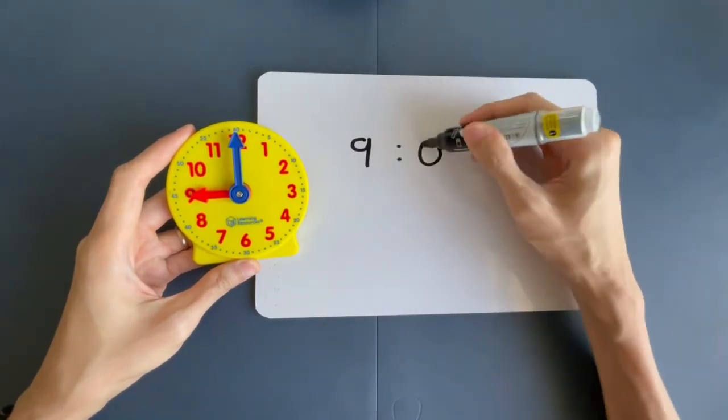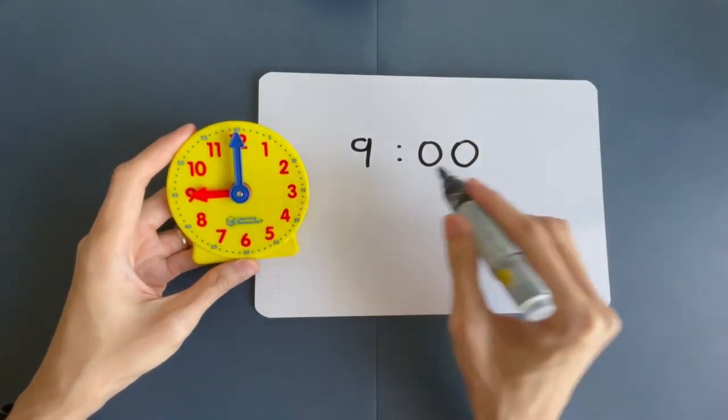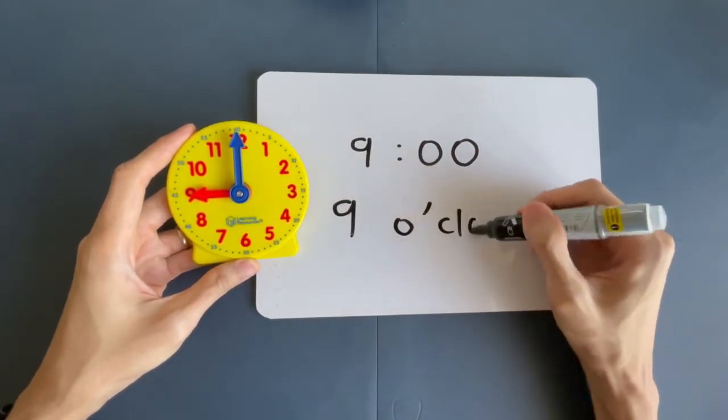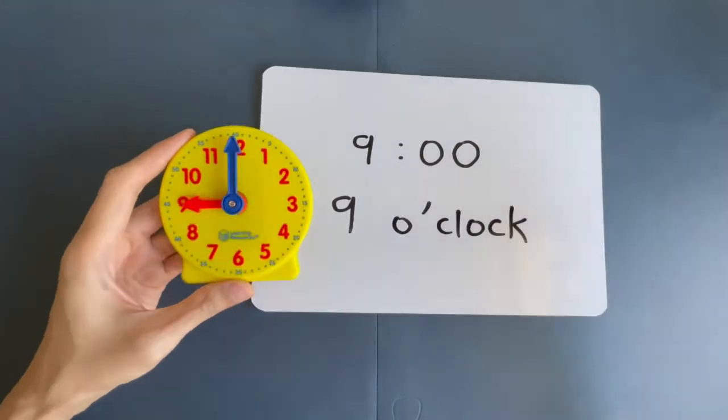Remember to write your dots. 9.00. And how do we spell it? 9 o'clock. That simple.